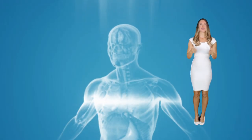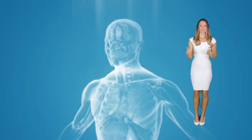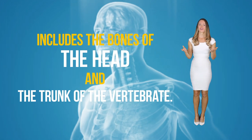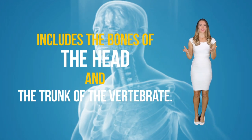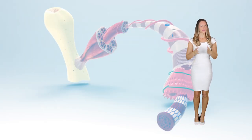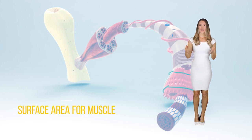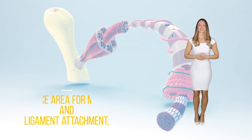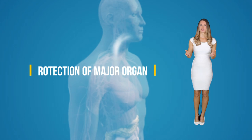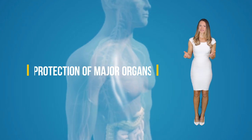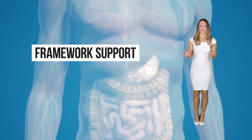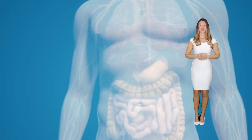The axial skeleton is the part of the skeleton that includes the bones of the head and the trunk of the vertebrae. It consists of 80 bones. Its responsibilities include surface area for muscle and ligament attachment, protection of major organs, and framework support. These are the major functions of the axial skeleton.